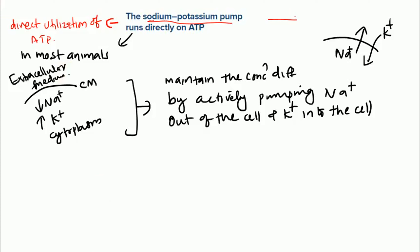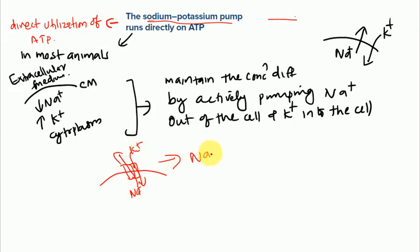The protein transporter present in the cell membrane that helps transport sodium and potassium ions is called the sodium potassium pump. In the cell membrane there is a transporter which facilitates the movement of sodium and potassium, and it is called the sodium potassium pump. It uses ATP — this is an example of active transport, so it must use ATP to move these two ions.